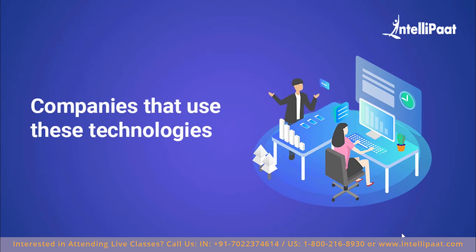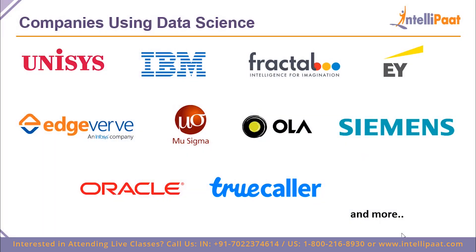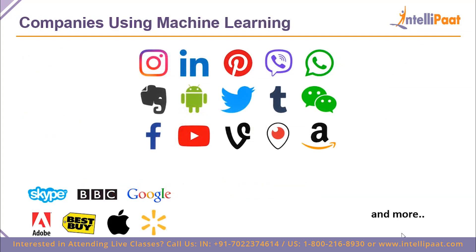On companies using these technologies: for data science, companies include Unisys, IBM, Fractal Analytics, EY (Ernst & Young), Edgeworth, Mu Sigma, Ola, Oracle, and thousands of others. For machine learning, it has a very strong hold in social media — Instagram, LinkedIn, Pinterest, WhatsApp, Evernote, Twitter, WeChat, Facebook, and many more. As per a 2015 survey, machine learning was used most efficiently in social media. Other companies include Adobe, Best Buy, Apple, Walmart, Google, BBC, Skype, and all Fortune 500 companies.